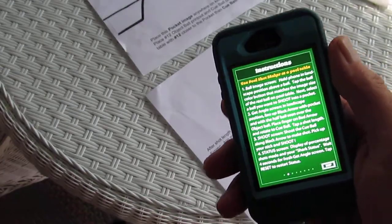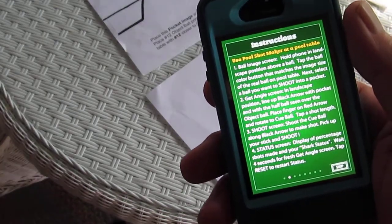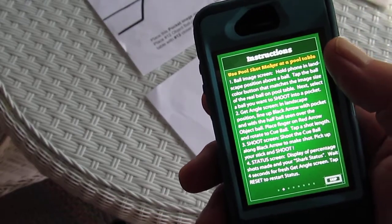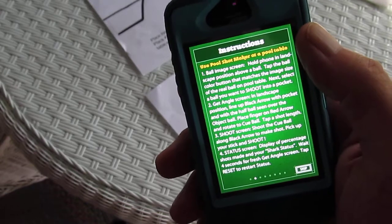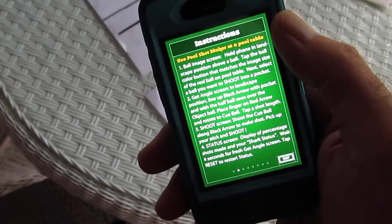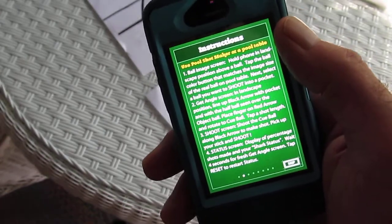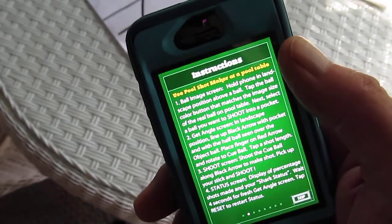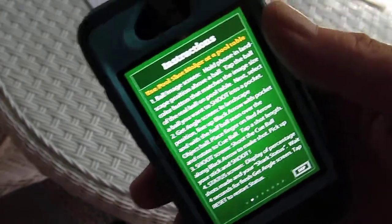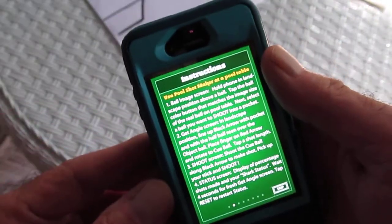Hello. Today I'm demonstrating the use of the RealPool Shot Maker app. This is an app you take to the RealPool tables and you use it to analyze the shot. You put the phone down and then you take the shot.